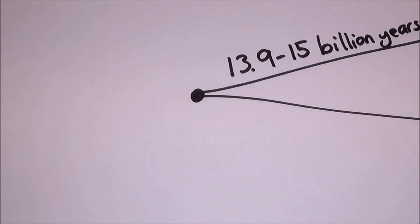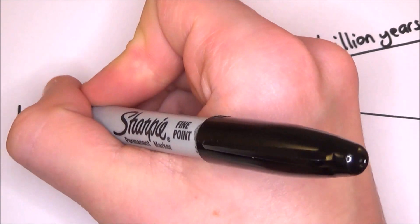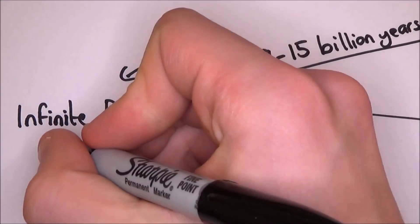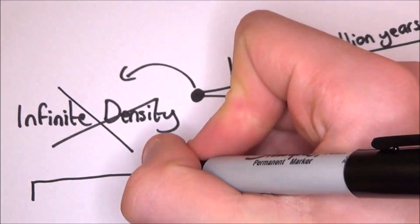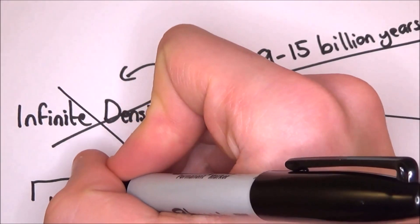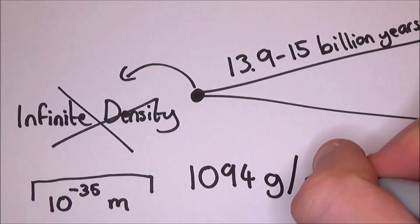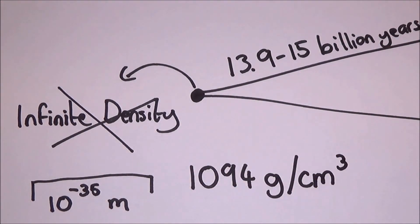But quantum physics tells us that the extremes like a singularity with infinite density is meaningless. In fact, it suggests that the region from whence it came was no bigger cross than the Planck length, about 10 to the minus 35 meters, and the density was not infinite, but 10^94 grams per cubic centimeter, so about a kilogram per cubic centimeter.